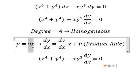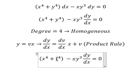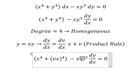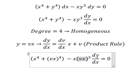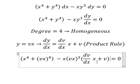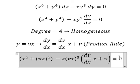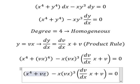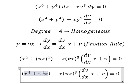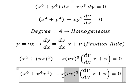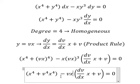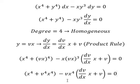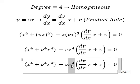So I will substitute this in here. We change this term accordingly. So we have v to the power of 4 times x to the power of 4, and vx to the power of 4. Next we divide both sides by x to the power of 4.